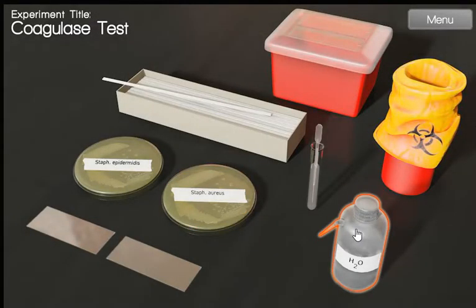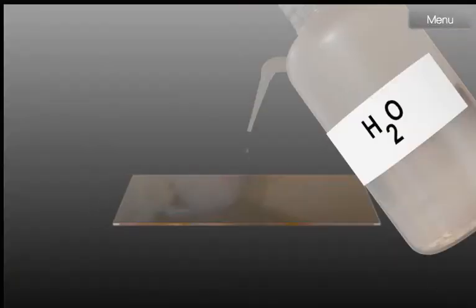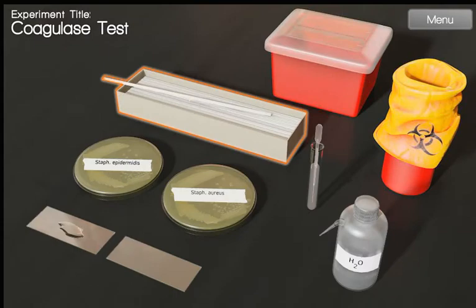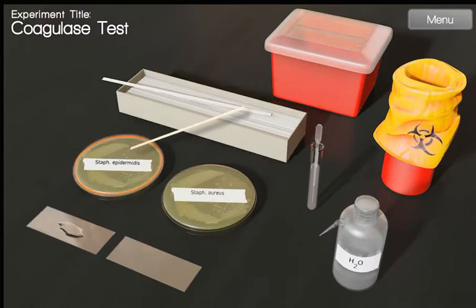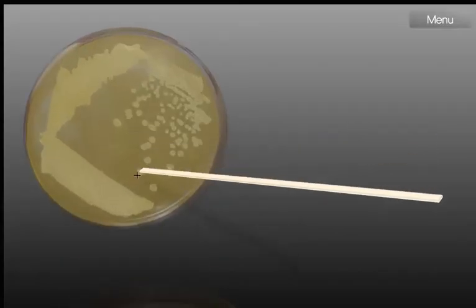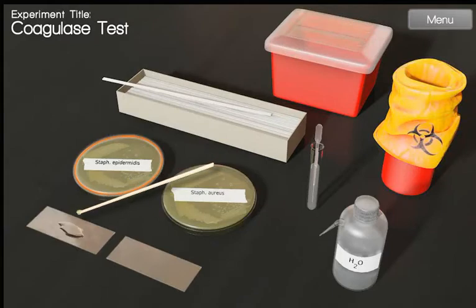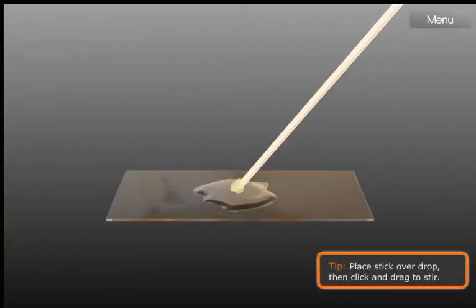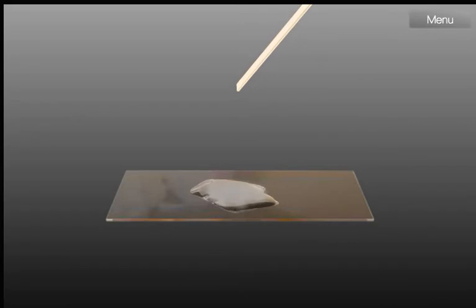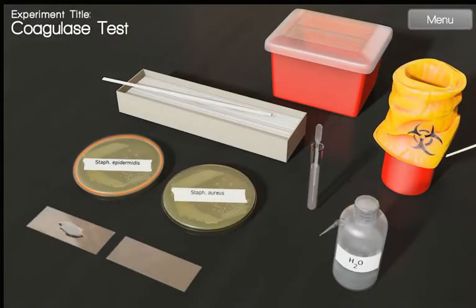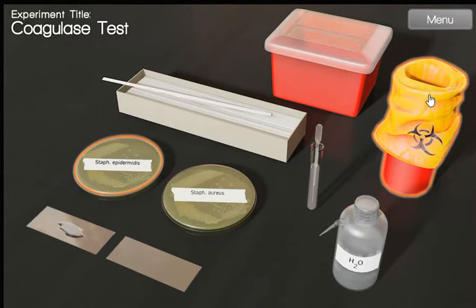First of all, we add water on the slide. After that, we take a stick, choose separate colonies of Staphylococcus epidermidis, mix it, and put the stick in a biohazard container.